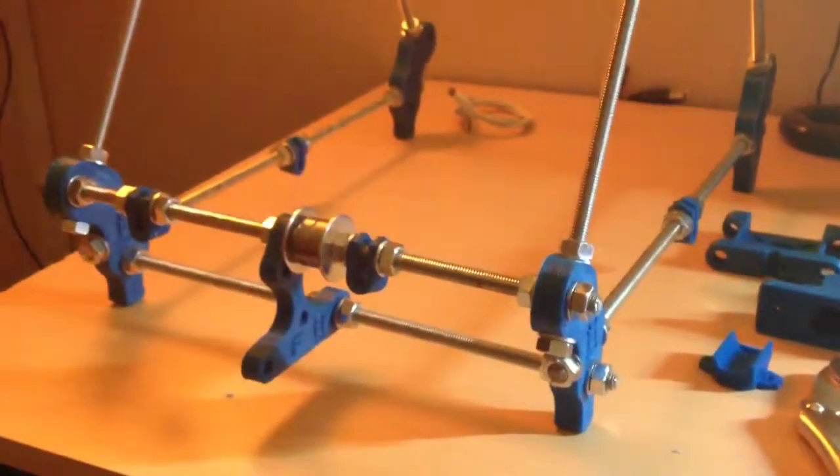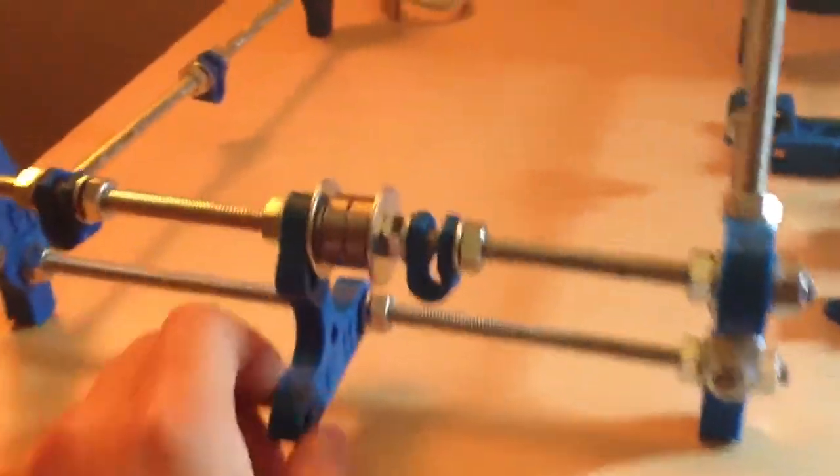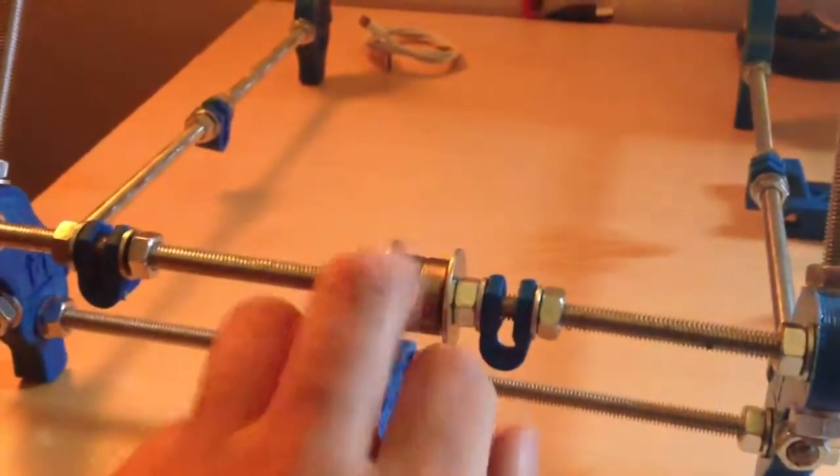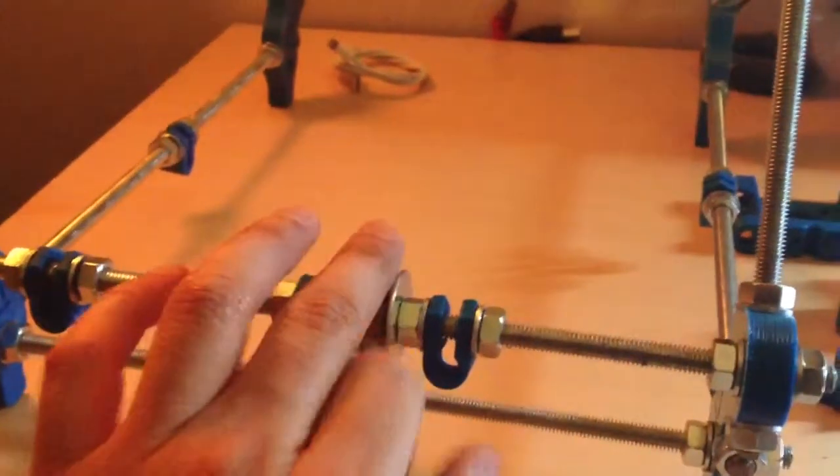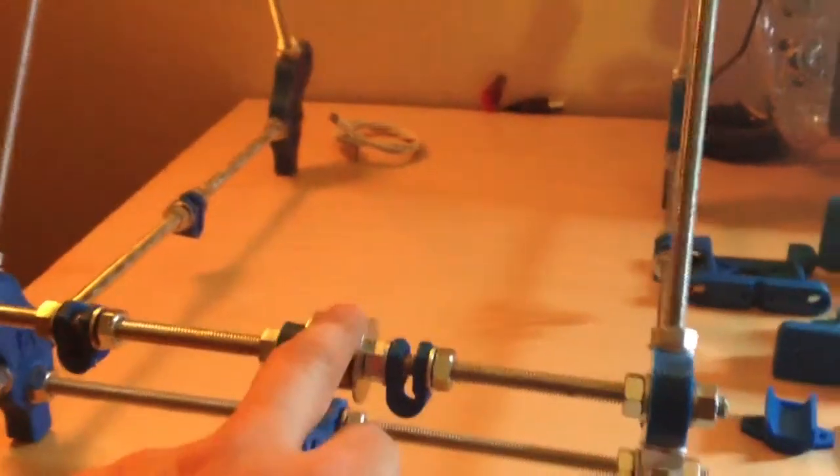And then I assembled the front side so it's not tightened up yet, but a couple of bearings here. And from what I understand the belt is going to run along that and control either the X or Y axis when it's printing.